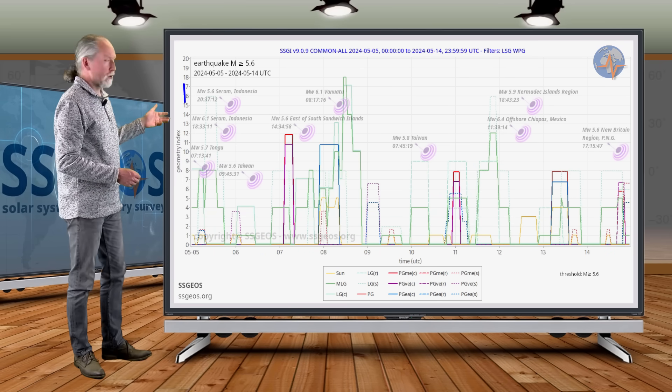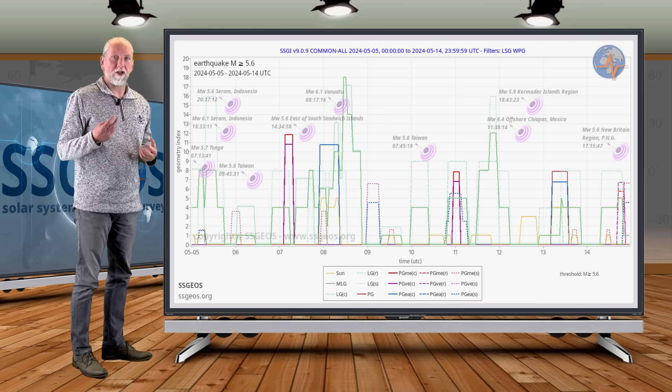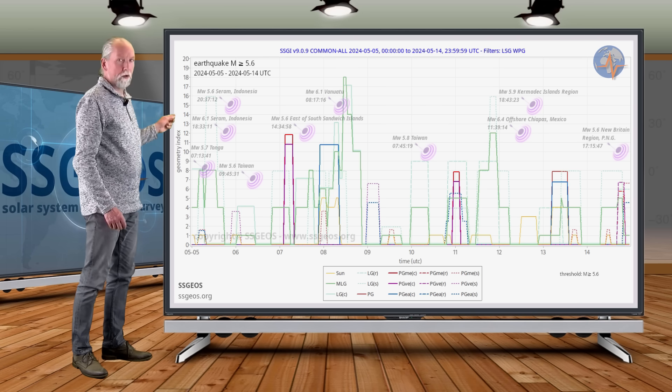We see some clustering of stronger tremors, first on the 5th, that followed on a series of lunar conjunctions on 3-4 May. It peaked 6.1 at Serum, Indonesia.